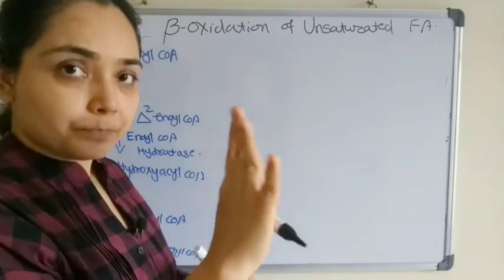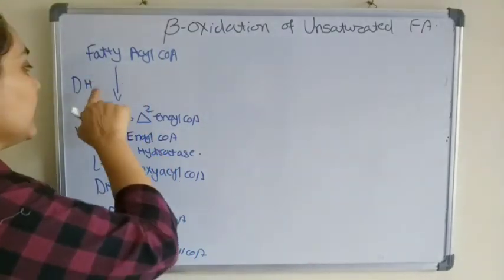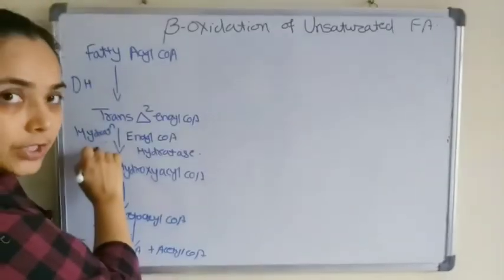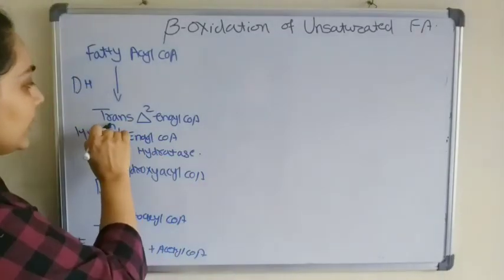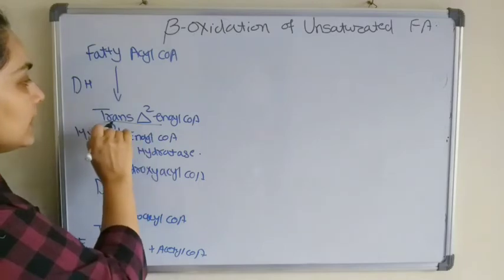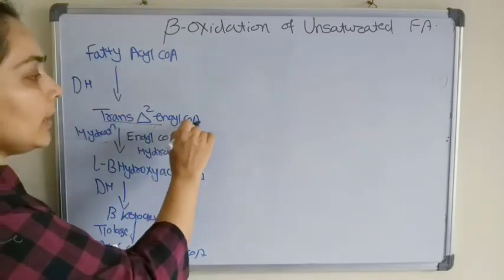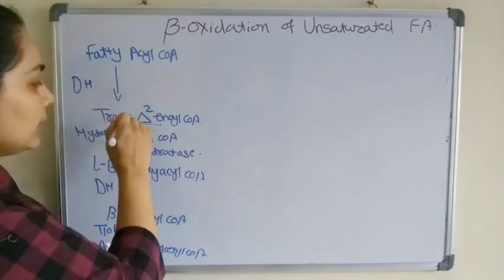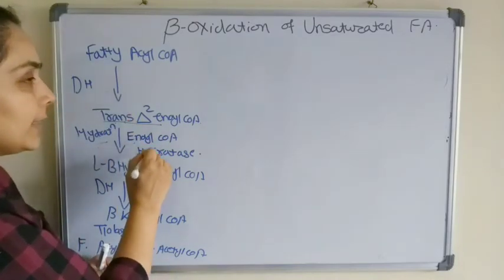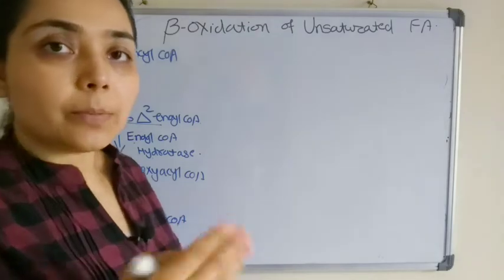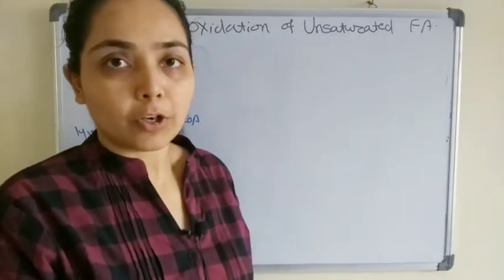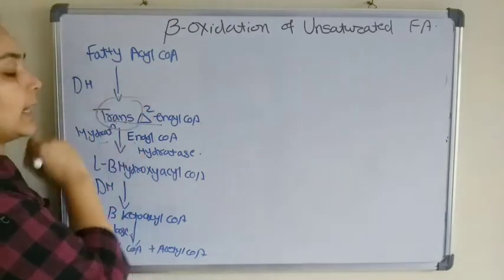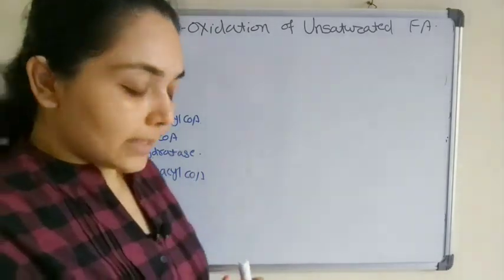In the first step dehydrogenation takes place, then hydration. If you look carefully, the product of dehydrogenation is trans-delta-2-enoyl CoA. On this product, enoyl CoA hydratase will act, and hydration means addition of one water molecule takes place. The key difference here is the trans configuration.